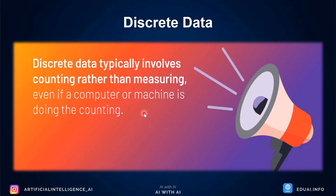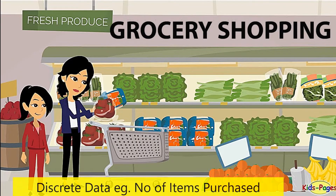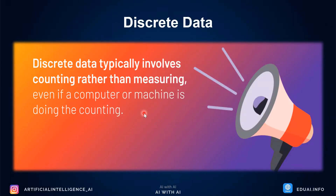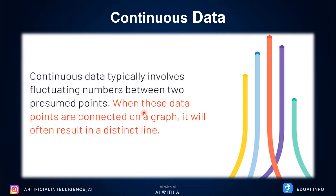More examples of discrete data: the number of customers visiting a shopping mall, or the number of different items bought — the number doesn't have any relation, it's just a whole number. The number of items you buy at the grocery store each week is also discrete — it is just a count, not a measurement. It is not a continuous value.